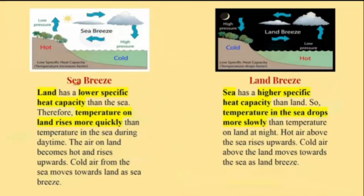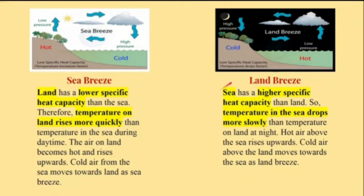Sea breeze: Land has a lower specific heat capacity than the sea. Therefore, temperature on land rises more quickly than temperature in the sea during daytime. The air on land becomes hot and rises upwards, and cold air from the sea moves towards land as sea breeze. Land breeze: The sea has a higher specific heat capacity than land. So, temperature in the sea drops more slowly than temperature on land at night. Hot air above the sea rises upwards, and cold air above the land moves towards the sea as land breeze.